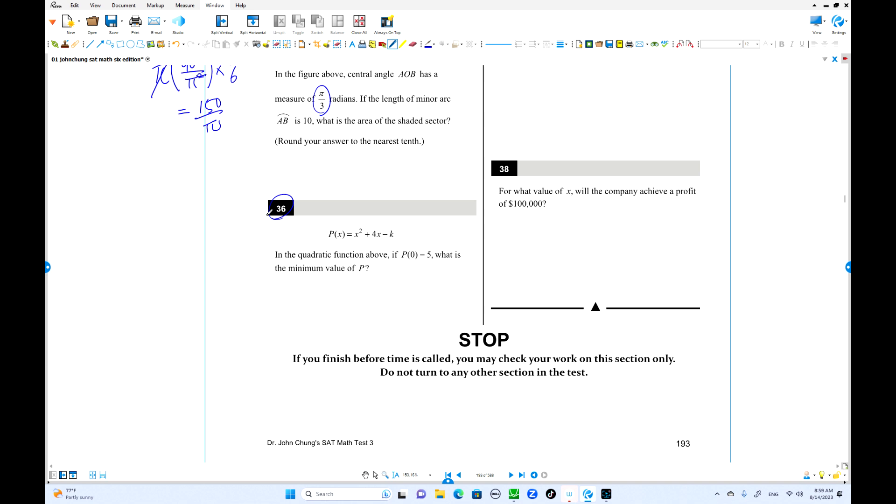Problem 36: P(0) equals 5. Put 0 in: negative k equals 5, so k equals negative 5. The equation becomes P(x) equals x squared plus 4x plus 5. To find the minimum, change to vertex form: (x + 2) squared. Half of 4 is 2. Check: 4 plus 5 is 9, so add 1 to get (x + 2) squared plus 1. The minimum is 1.